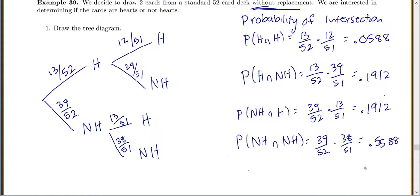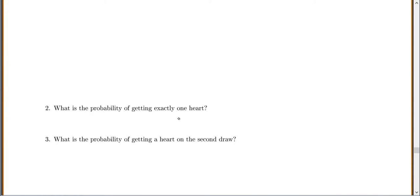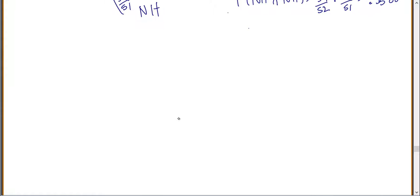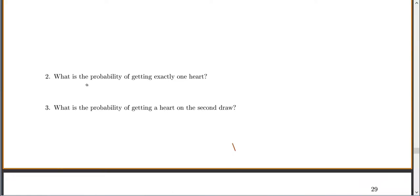Now that we have all of those, now we go through and see what we actually want to find. What is the probability of getting exactly one heart? If you want to get exactly one heart, you go through and say which ones have one heart? This one has two hearts, this one has one heart, and this one has one heart. So these two combinations each have one heart. We get 0.1912 plus 0.1912, which gives 0.3824.